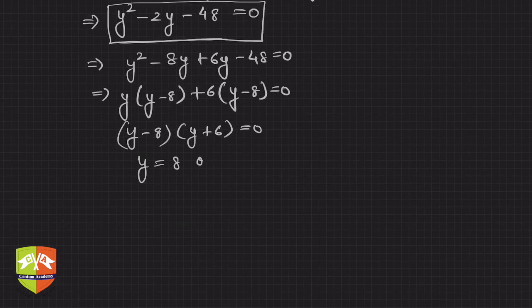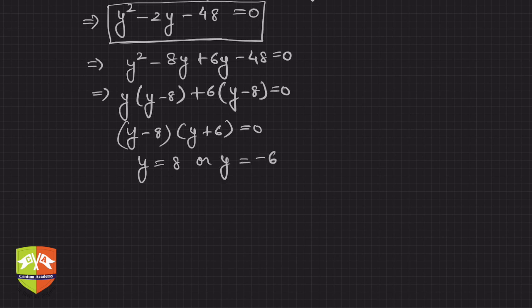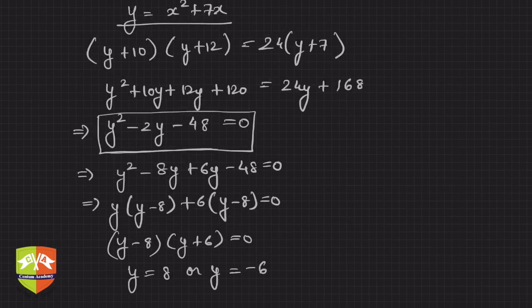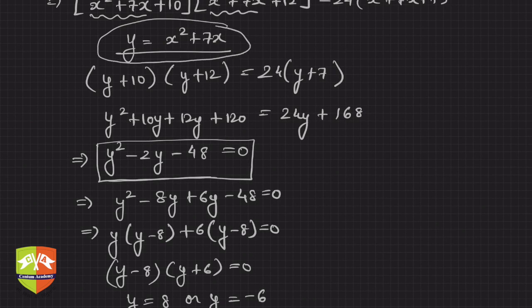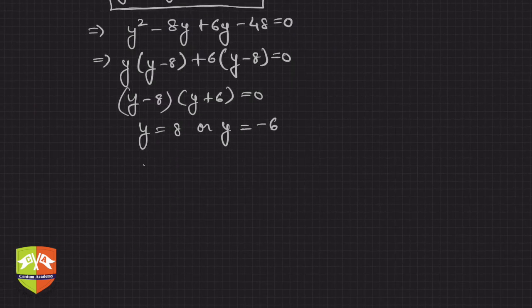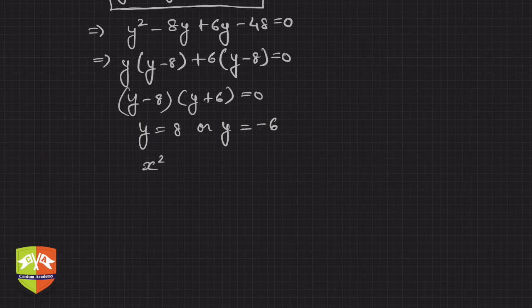That means what? y is either 8 or y is equal to minus 6. We got y, but this question didn't demand y, it demanded x. So what was y? y was x²+7x.